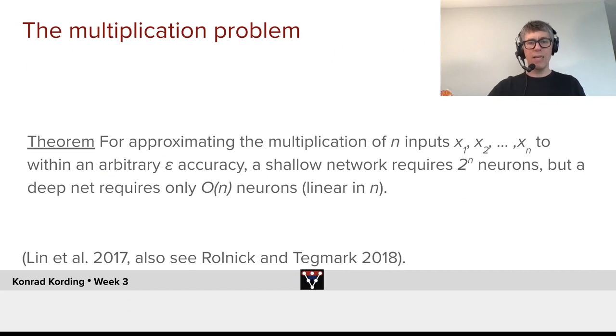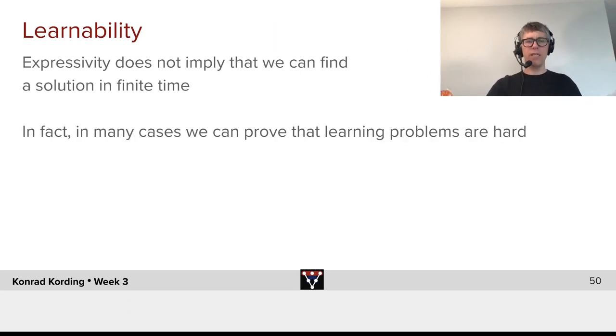Another one is the multiplication problem. This theorem says that for approximating the multiplication of n inputs, x1 up to xn, to within an arbitrary epsilon accuracy, a shallow network requires two to the n neurons, but a deep one only requires O of n neurons, which is linear in n. Again, yet one more of these. There exist problems for which depth is very, very useful.